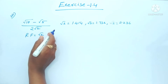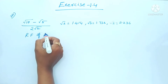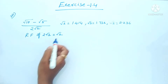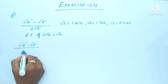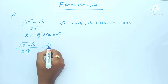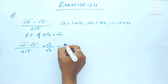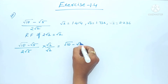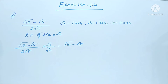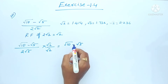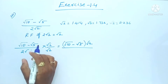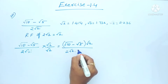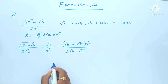Now, in the denominator, √2 is there. The rationalizing factor of 2√2 is √2. So we will multiply both the numerator and denominator by √2, giving us (√10 - √5) · √2 in the numerator.